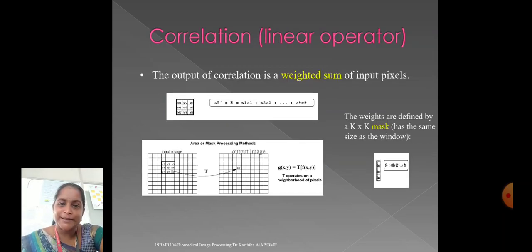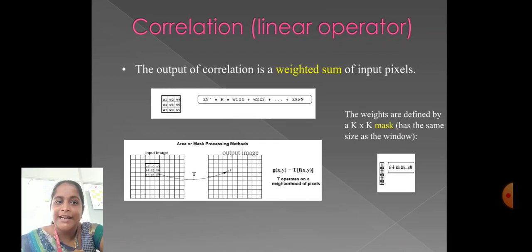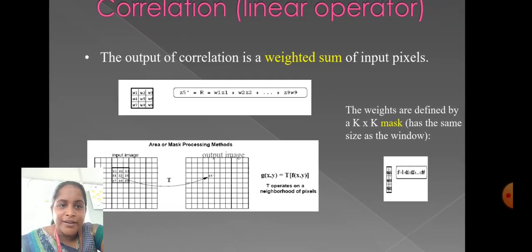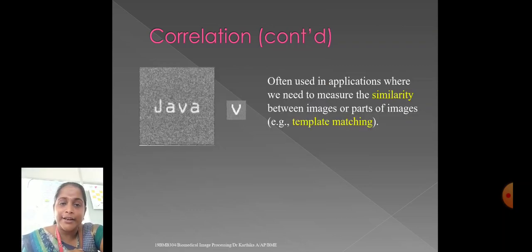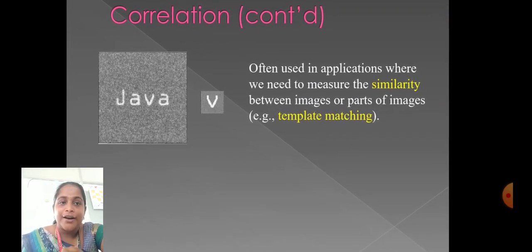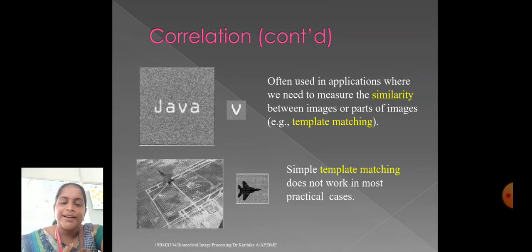Correlation, it is a linear operator. The output of a correlation is a weighted sum of the input pixels. The weights are defined in a K cross K mask. It has the same size of the window. Often it is used in applications where we need to measure the similarity between the images or parts of the images. For example, template matching.